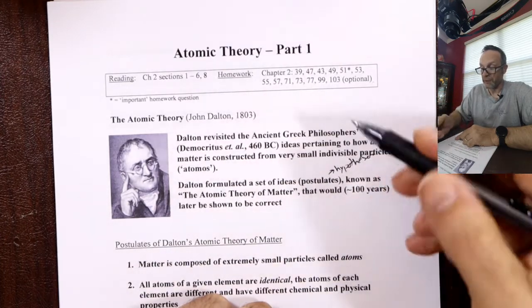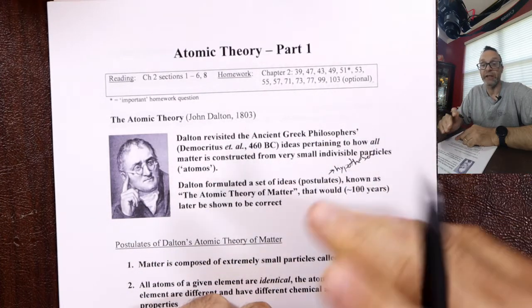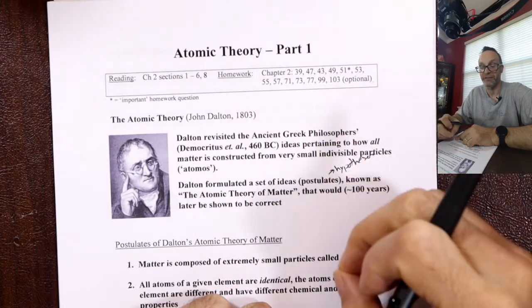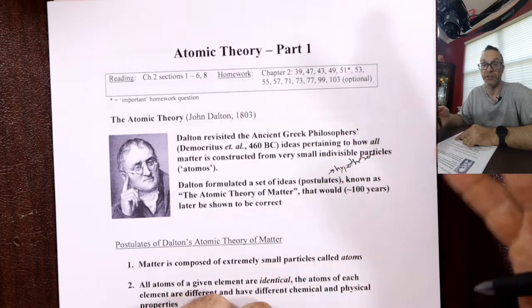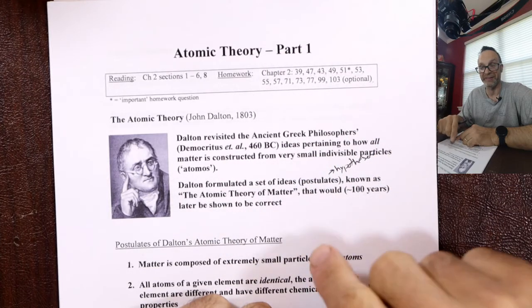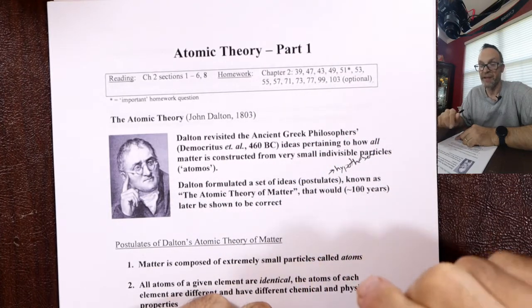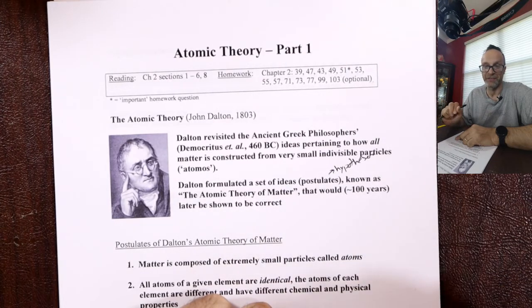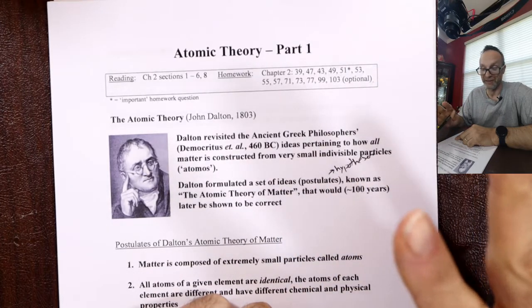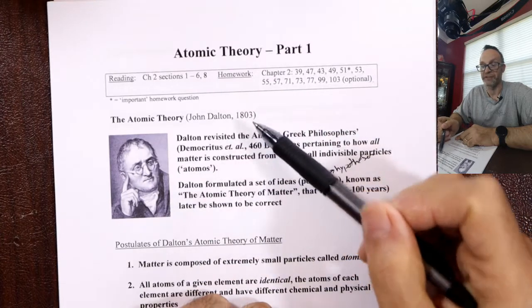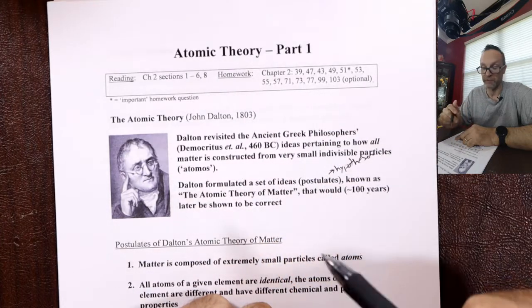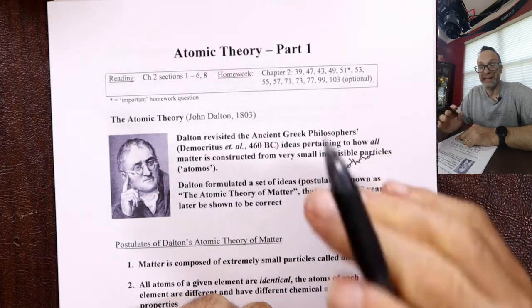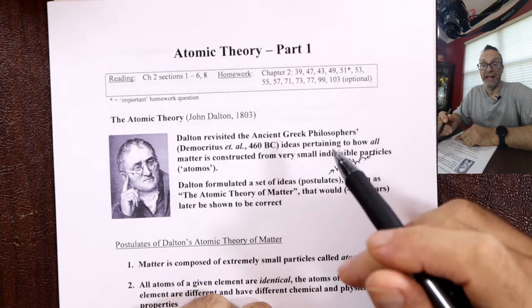Dalton's postulates — hypotheses — back in the day could not be proved. As we'll see later in the packet, we couldn't prove the existence of atoms until later when technology caught up. We were able to see them in the 1980s with an STM. The golden age of chemistry was really around 1900, when these things were proven. Dalton comes up with these ideas which we now just assume are correct.